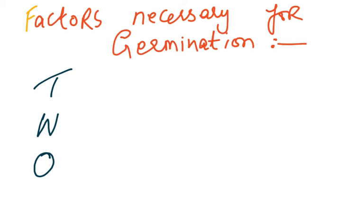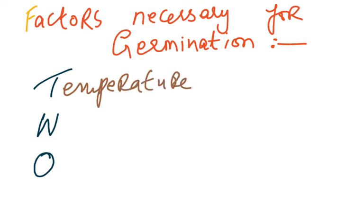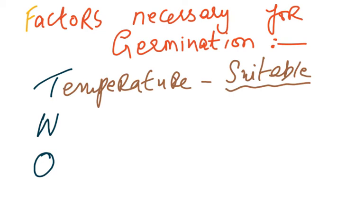A simple mnemonic to remember the conditions is TWO — standing for Temperature, Water, and Oxygen. A suitable temperature is required because all processes in biology are enzyme-controlled reactions. Enzymes have an optimum temperature under which they work best, and the suitable temperature will be different for every seed — different for a mango seed, an apple seed, or a cucumber seed.